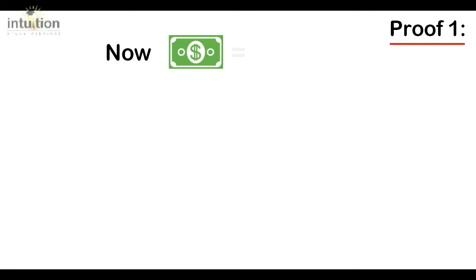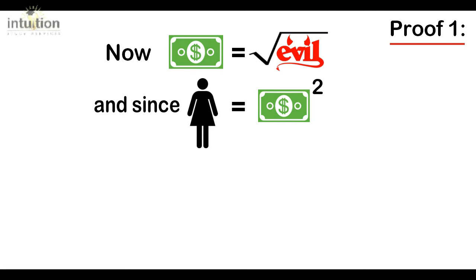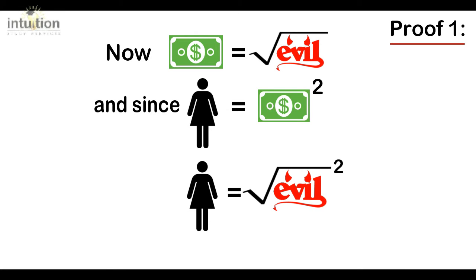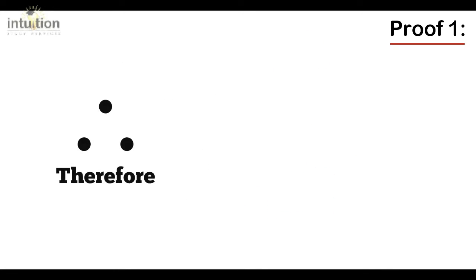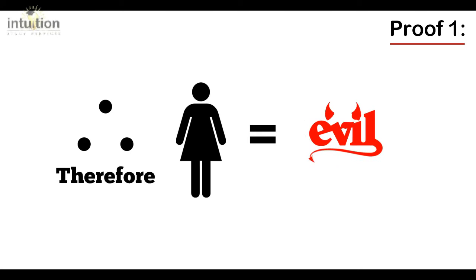Now it's very commonly said that money is the root of all evil. And since girls equal money squared, by simple substitution, we can see that girls equal the root of all evil squared. And since the square root gets cancelled by the squared, this simplifies to just evil. So therefore girls equal evil.